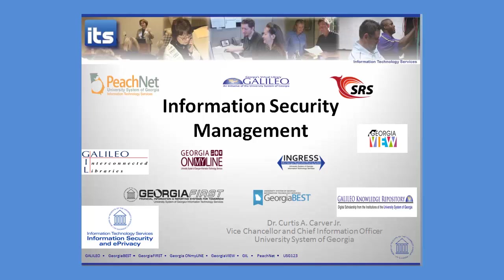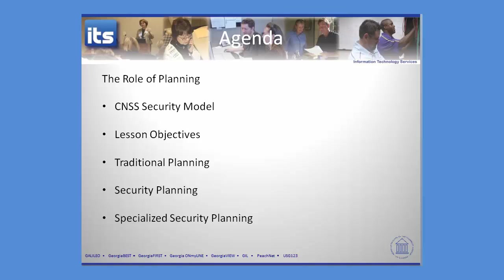Welcome back and welcome to Chapter 2. We're going into information security management. What we're going to do in this particular lesson is go back and look at our CNSS model, talk a little bit about traditional components associated with planning — things like a vision statement, a mission statement, and a value statement — what those mean to organizations, and then the different types of plans within an organization and how security ties within that.